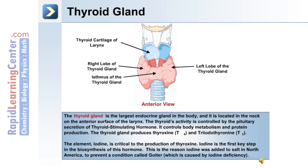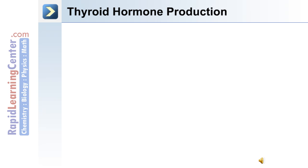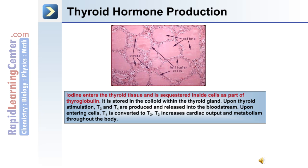The thyroid gland produces thyroxine, or T4, and triiodothyronine, or T3. The element iodine is critical to the production of thyroxine and is the first step in the biosynthesis of this hormone. This is why iodine was added to salt in North America — to prevent goiter, which is caused by iodine deficiency. Iodine enters thyroid tissue and is sequestered inside cells as part of thyroglobulin.